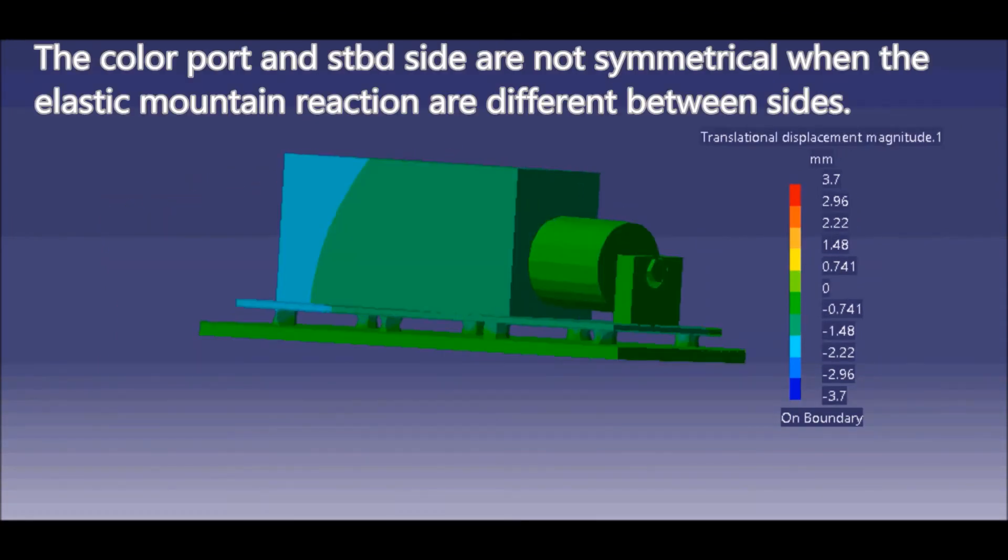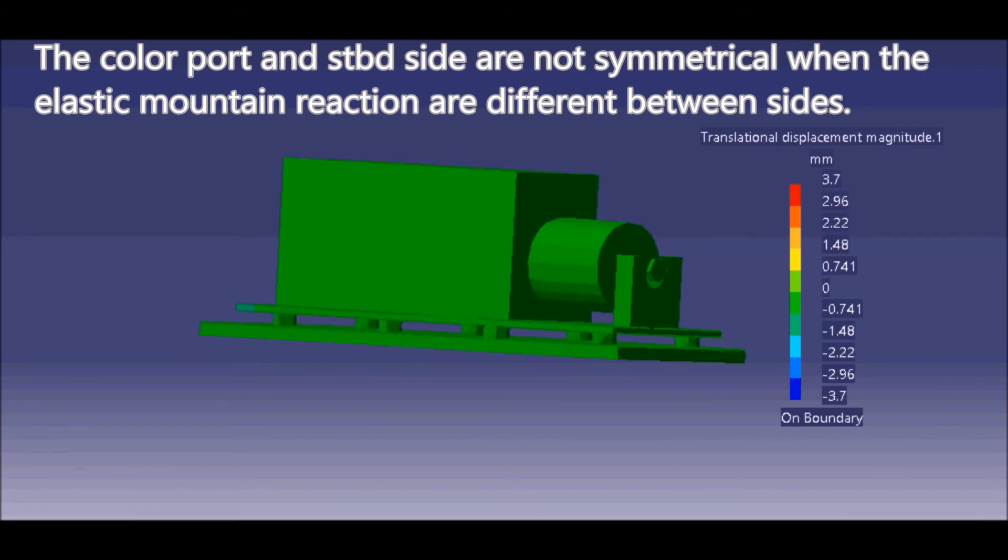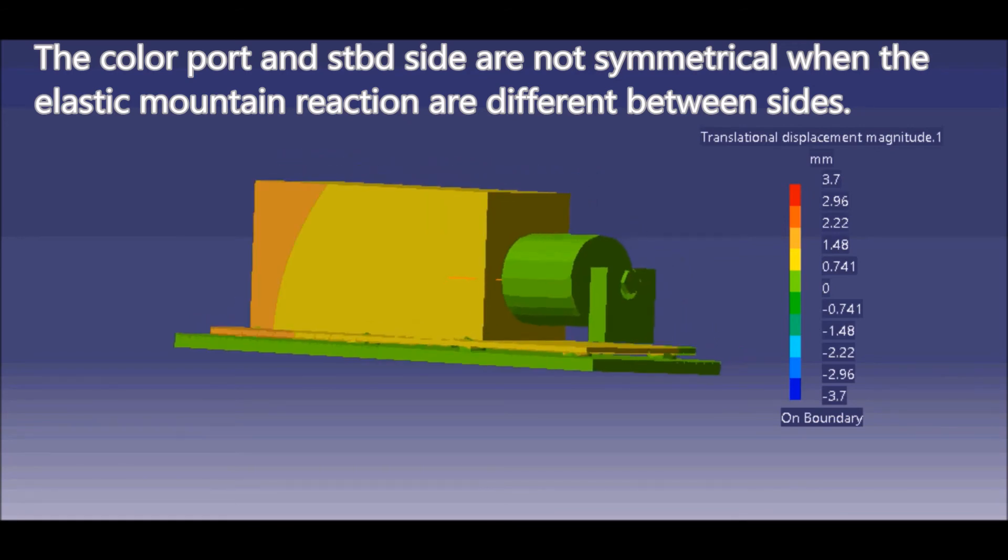The port and starboard sides are not symmetrical when the elastic mounting reactions are different between sides.